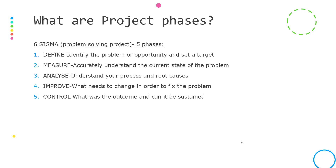If you're undertaking a Six Sigma project designed around resolving a problem, then the five phases will be: 1. Define, 2. Measure, 3. Analyze, 4. Improve, and 5. Control — or the acronym DMAIC.